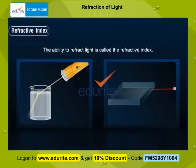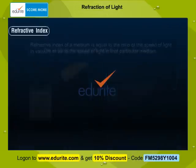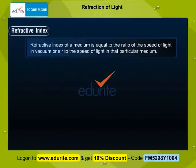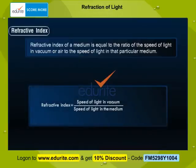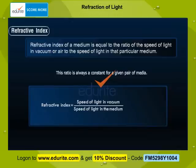The ability to refract light is called the refractive index. Refractive index of a medium is equal to the ratio of the speed of light in vacuum or air to the speed of light in that particular medium. Refractive index (μ) equals speed of light in vacuum divided by speed of light in the medium. This ratio is always a constant for a given pair of media, and is represented by the Greek letter mu (μ).